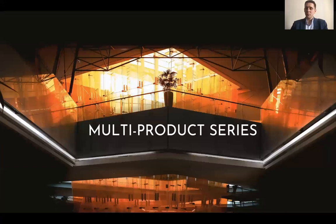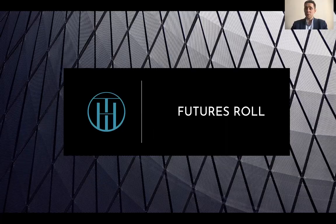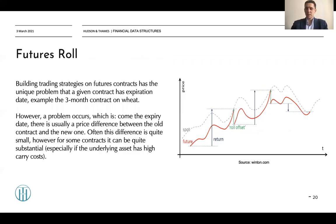Let's talk about dealing with a multi-product series. The first technique, which is massively used by futures traders, is the so-called futures roll. Building trading strategies on futures contracts has the unique problem that a given contract has an expiration date — for example, a three-month contract on wheat, or a quarterly contract on S&P 500 E-mini futures. Unlike stocks, which don't have expiration dates, we need to deal with this problem.